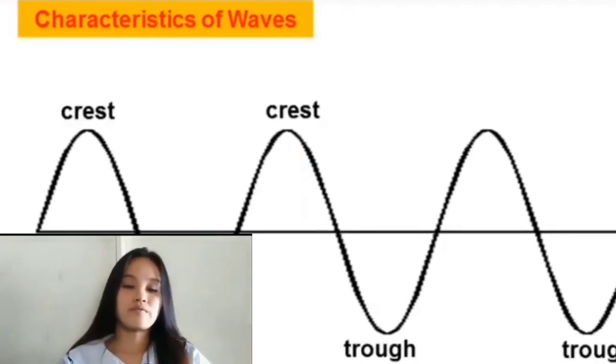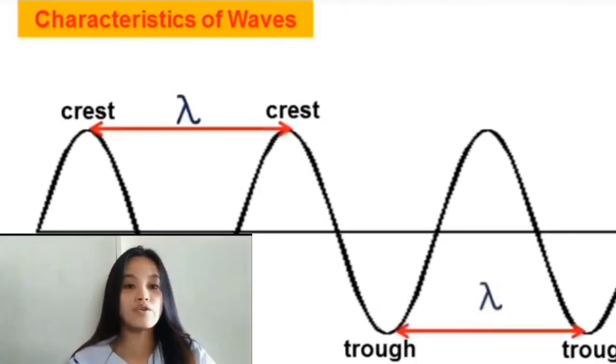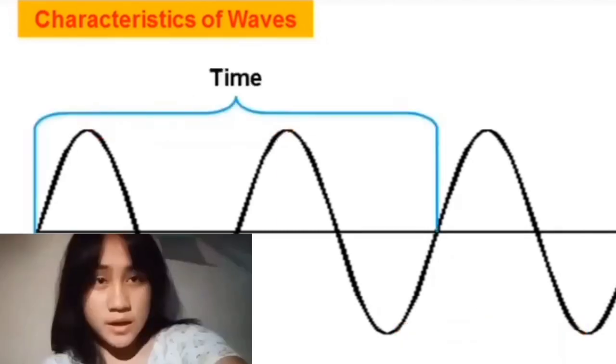The second characteristic is wavelength. It is the distance between two consecutive crests or troughs, and is usually measured in meters.